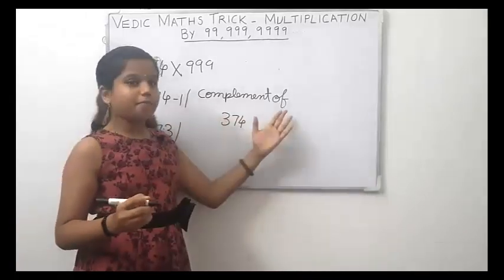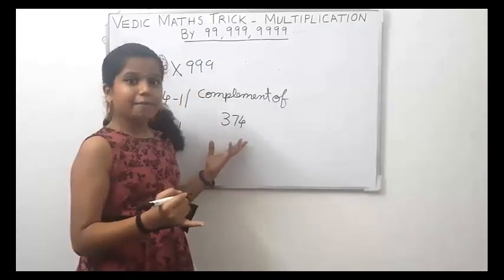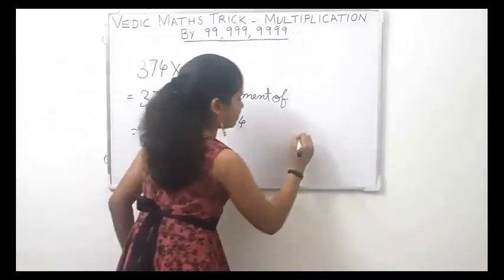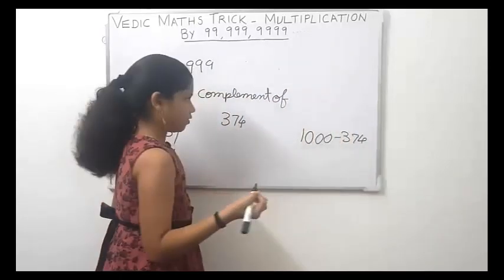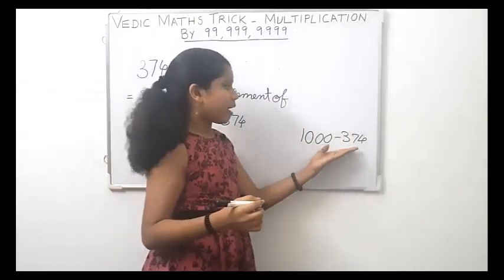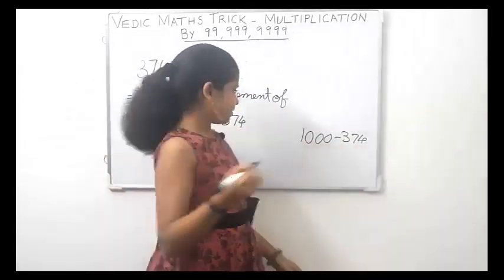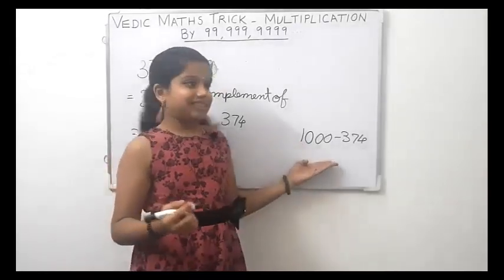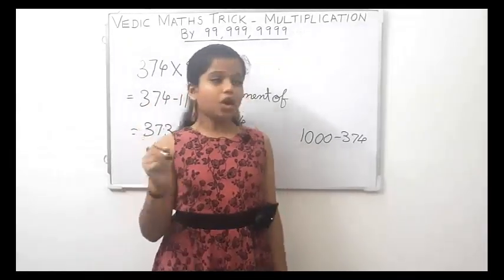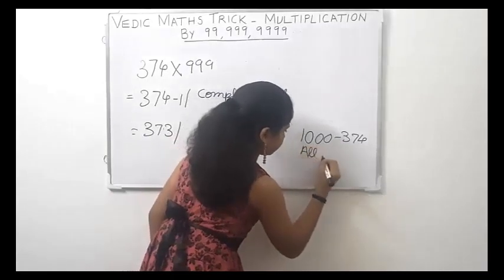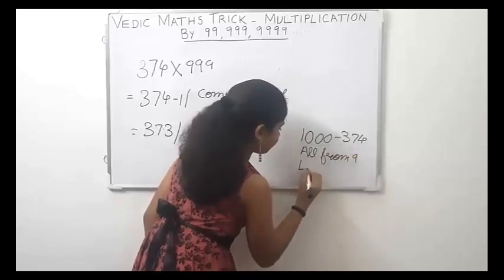Now, 374 minus 1 is 373. We need to subtract the number 374 from the base 1000. Here, as the number 374 is a 3-digit number, the base is 1000. Instead of doing this directly, there is a Vedic method to find the complement by applying the rule: all from 9 and last from 10.